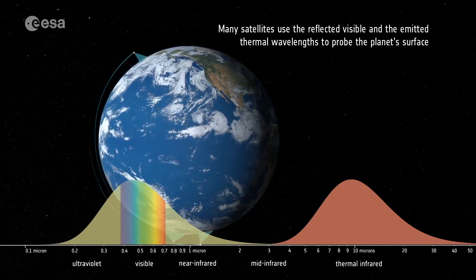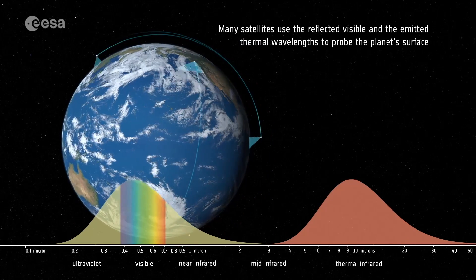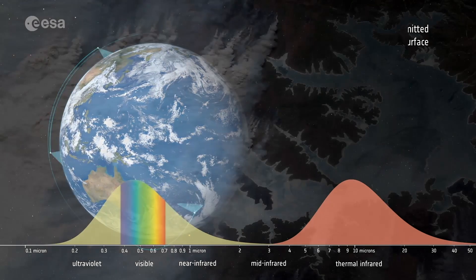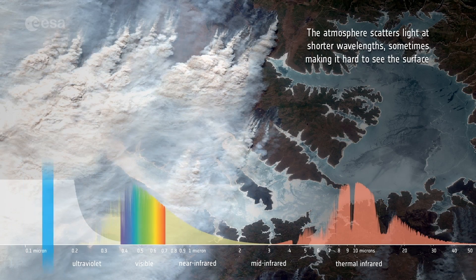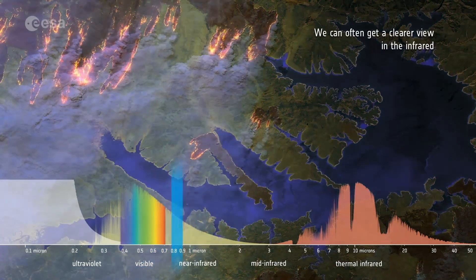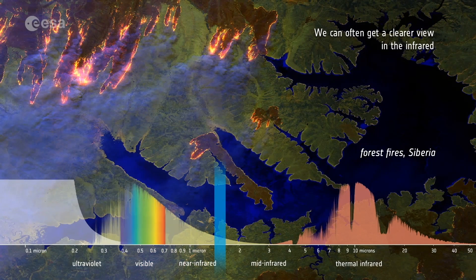Many satellites use the reflected visible and the emitted thermal wavelengths to probe the planet's surface. The atmosphere scatters light at shorter wavelengths, sometimes making it hard to see the surface. We can often get a clearer view in the infrared.